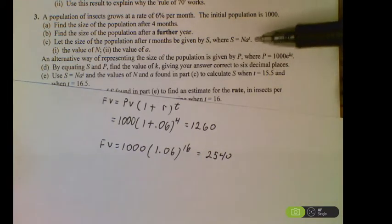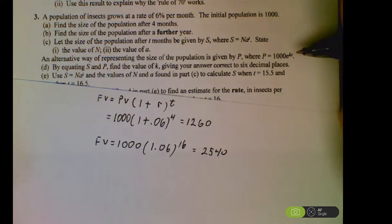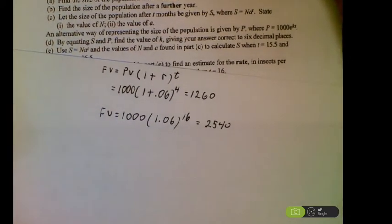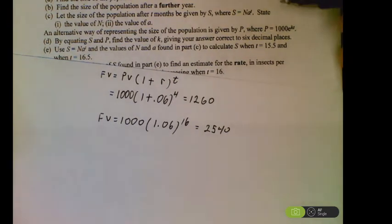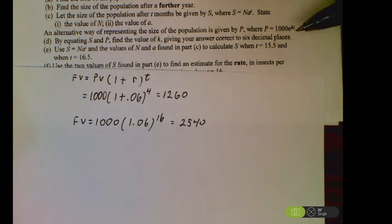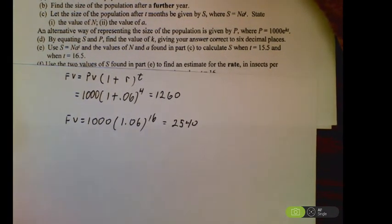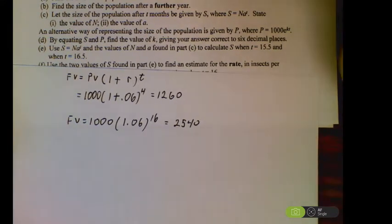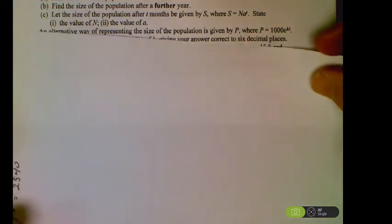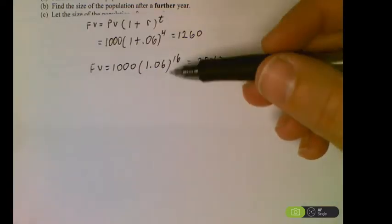An alternative way of representing the size of the population is looking like this. This is one you would have seen in Algebra 2. We used to call it PERT. It was P equals E to the RT formula. This represented constant compounding instead of specific compounding like monthly. I wouldn't use this formula unless the directions specifically told you to use it. This is continual compounding, so this isn't one we typically use unless they specifically tell you to.